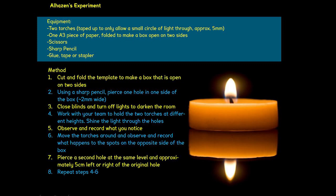Hold the two torches at different heights, you're going to have to use your two hands. Shine the light through the holes, observe and record what you notice. Then move the torches around and observe and record what happens to the spots on the opposite side of the box.